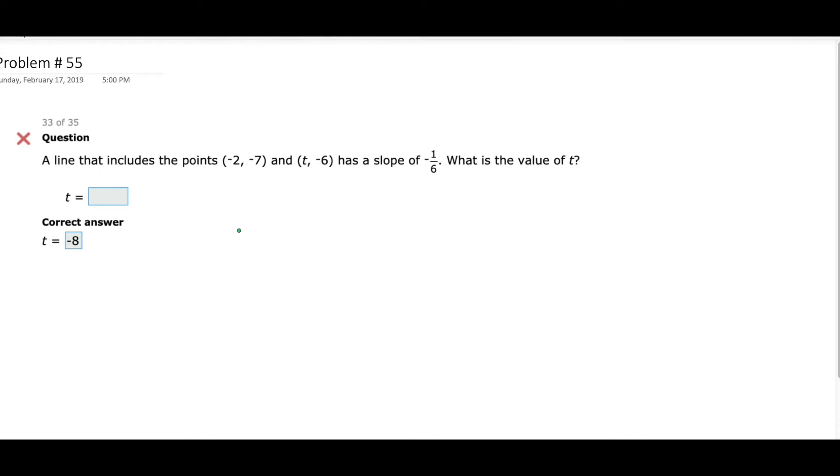Okay, so a line that includes the points (-2, -7) and (t, -6) has a slope of -1/6. Alright, so you want to set up the slope formula. What's the slope formula? y2 minus y1 over x2 minus x1.